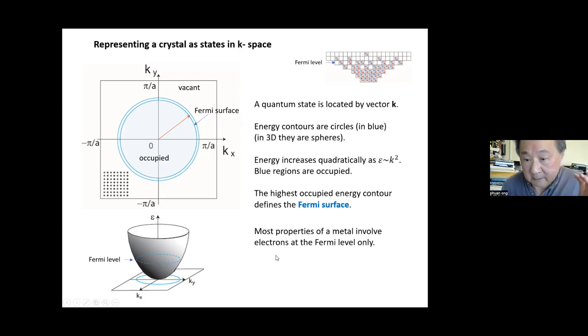This circle encloses all the occupied states, and the vacant states are on the unshaded areas. This energy level is called the Fermi level, a quantity that is very important for folks who look at the physics of metals. In K space, its shape—here it's a circle—is called the Fermi surface. The advantage of talking about K space is that you're only interested in the electrons that occupy the Fermi level.